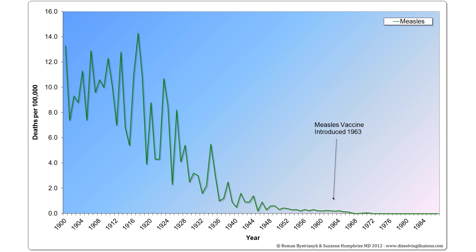Measles. Mortality data began to be recorded in the United States in 1900. The first measles vaccine became available in 1963. Unfortunately, it had severe problems and was later switched to a different type of vaccine that became available in 1967. However, the death rate for measles had already declined by more than 98% before 1963.